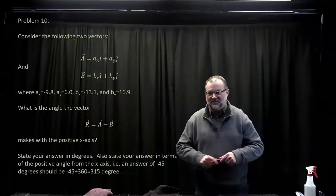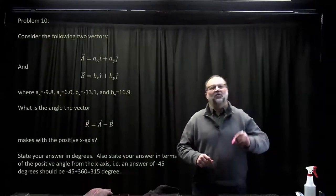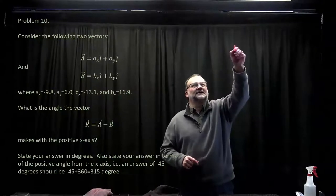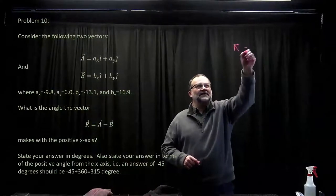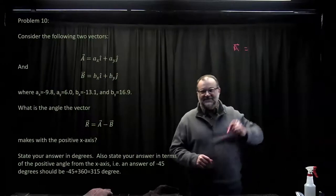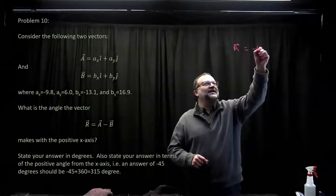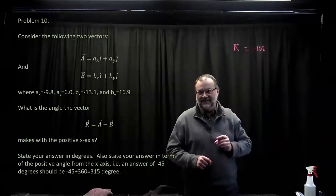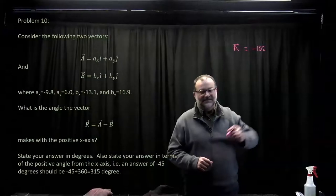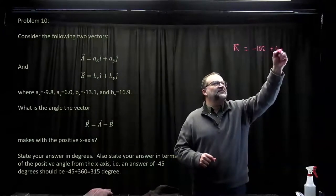So I'm going to approximate these vectors to make writing this down easier. So a is minus 10 i-hat plus 6 j-hat.